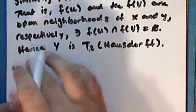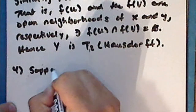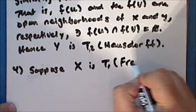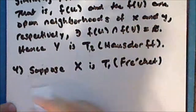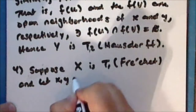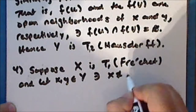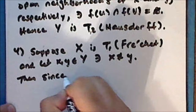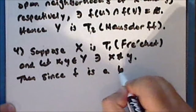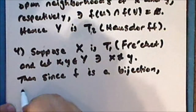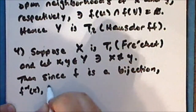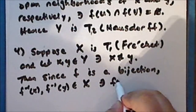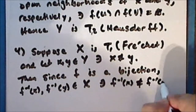So now suppose that the space X is T1, or Fréchet, and once again, let the points x and y be points in the space Y such that x is not equal to y. Then since the function f is a bijection, the inverse of x and the inverse of y are points in the space X such that the inverse of x is not equal to the inverse of y.